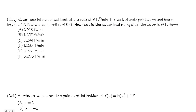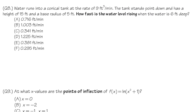Number 8: related rates — water runs into a conical tank at 9 ft³/min. The tank has height 15 ft and base radius 5 ft. How fast is the water level rising when the water is 6 ft deep? Draw two pictures: the full tank and the water level at a given moment.